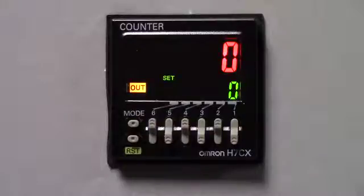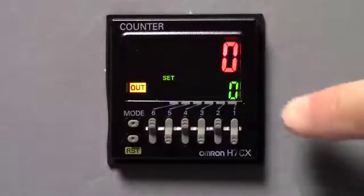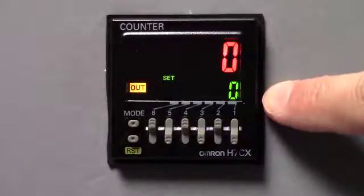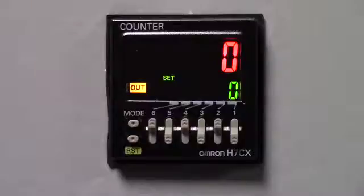Once you power up the unit, you will notice that the process value is set at zero in red, the set value is zero in green, and your output light is on. And that's okay, because our next step, which we're going to do, is the parameter setup.